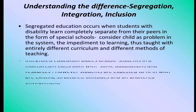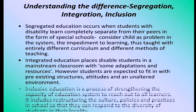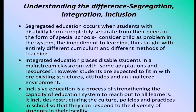Integrated education places disabled students in a mainstream classroom with some adaptation and resources, but expects them to fit into whatever type of resources or structure is provided. Inclusive education, by contrast, is a process of strengthening the capacity of the education system to reach out to all learners. It includes restructuring the culture, policies, and practices in schools so that they can respond to the diversity of students in their locality — making changes so every learner with different abilities can be adjusted in the environment under one roof.